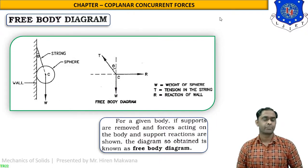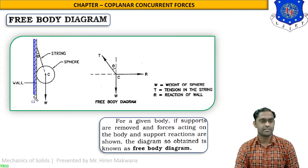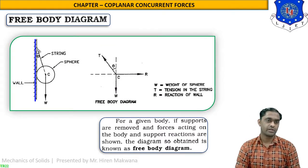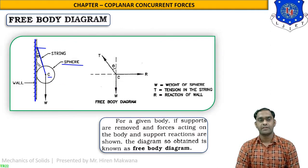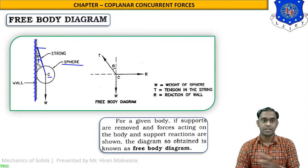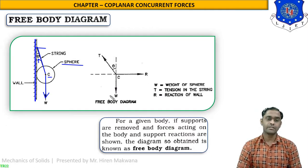Let us discuss this figure. You can see what is given: there is a vertical wall, and to this vertical wall from the upper point a straight string is connected at the center of this sphere. The center of the sphere is point C. The angle theta is between the string and the vertical wall. W is the weight of the sphere, which is always vertically downward. This is the free body diagram.